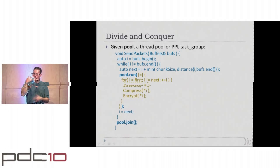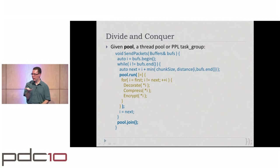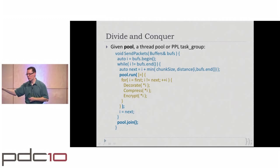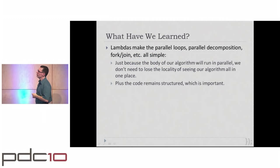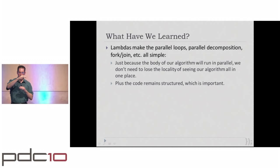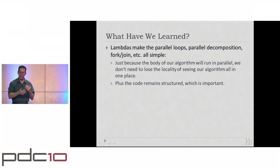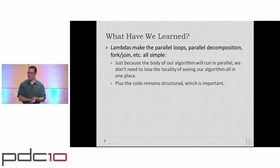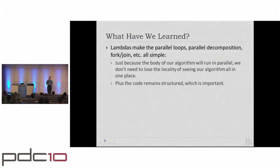The code looks sequential and imperative, but this spreads its work across whatever parallelism you have available. You'd notice that by saying pool.run, the while loop becomes a parallel form of while. You could take those lines and package them up into a parallel_while algorithm. Lambdas make it easy to write parallel loops and fork-join decomposition, because I just toss the body somewhere else to execute. Code remains structured in all cases, which is familiar yet lets us have awesome performance.